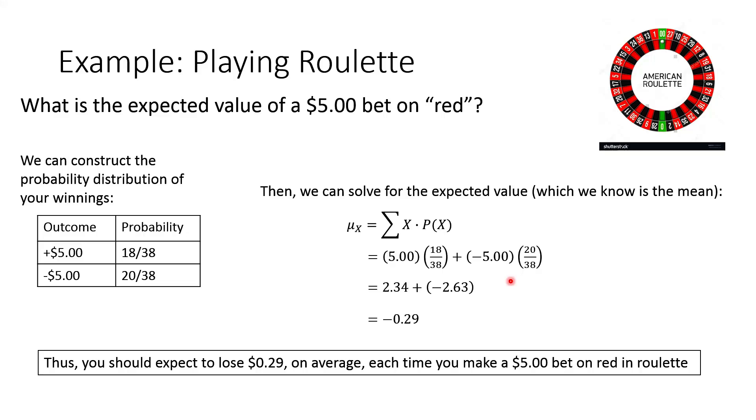And this is bad for you, but this is actually great for a casino because the casino knows that in the long run, every single time someone places a bet on red, they make $0.29. They can put it in the bank. They can mark it down on their revenue sheets because they know it's going to happen in the long run.